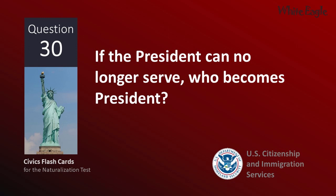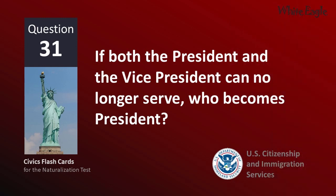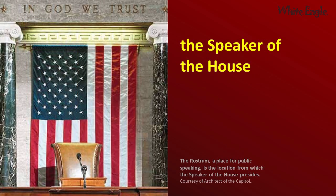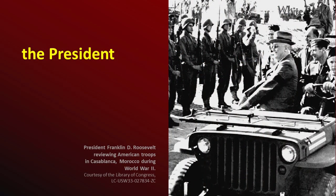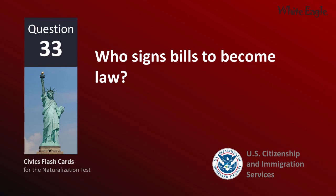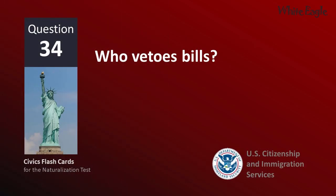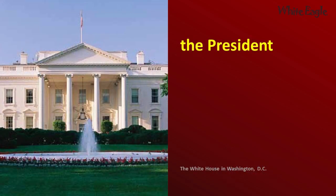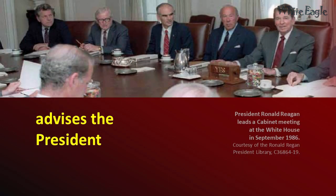If the President can no longer serve, who becomes President? The Vice President. If both the President and the Vice President can no longer serve, who becomes President? The Speaker of the House. Who is the Commander-in-Chief of the military? The President. Who signs bills to become laws? The President. Who vetoes bills? The President. What does the President's Cabinet do? Advises the President.